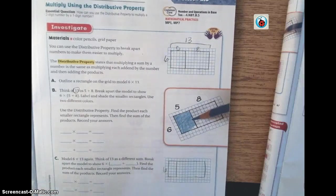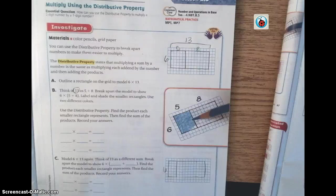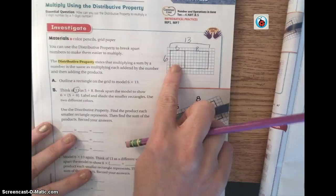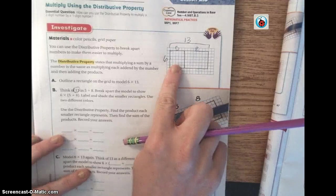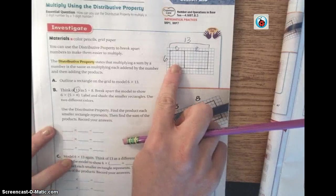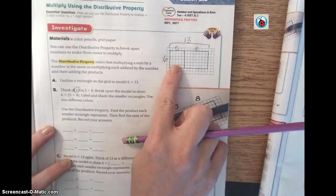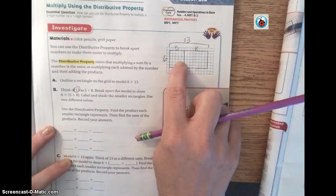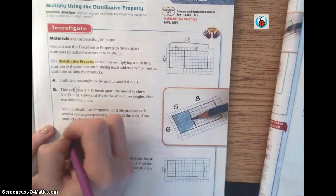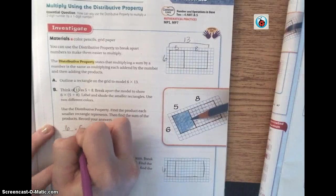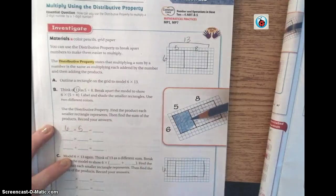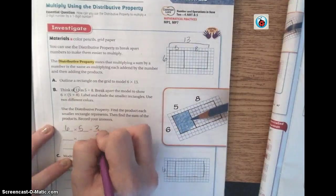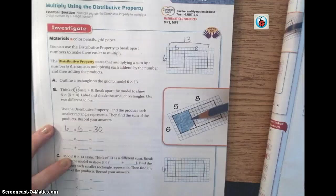It says use the distributive property. Find the product of each smaller rectangle represents. Then find the sum of the products. So let's just first look at this rectangle right here. What two numbers are we multiplying together in this rectangle right here? Steve? 6 and 5. So we're going to put 6 times 5 is equal to what? 30.